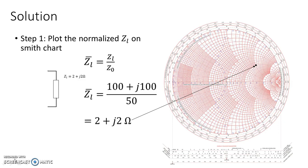The first step is to normalize and plot the normalized impedance on a Smith chart. We have ZL = 100 + j100 Ω and characteristic impedance Z0 = 50 Ω. Dividing ZL by Z0 gives the normalized impedance of 2 + j2, which has been plotted on the Smith chart.